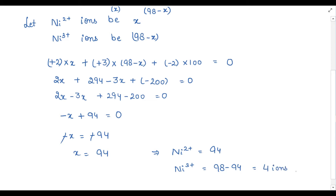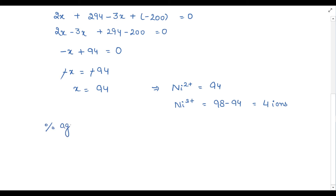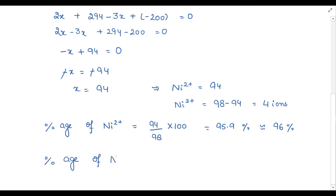अब percentage find out करते हैं। Percentage of Ni²⁺ = 94/98 × 100 = 95.9%, approximately 96%. और percentage of Ni³⁺ = 100 − 96 = 4% only। So हमारे पास Ni²⁺ approximately 96% और Ni³⁺ approximately 4% है।